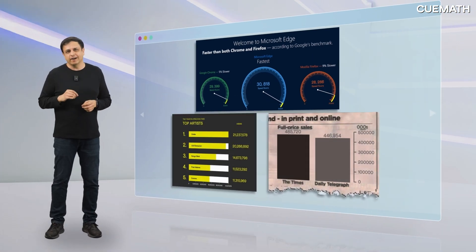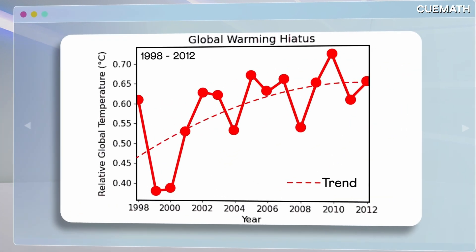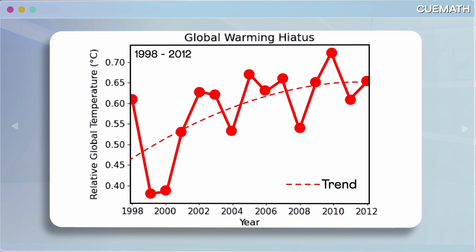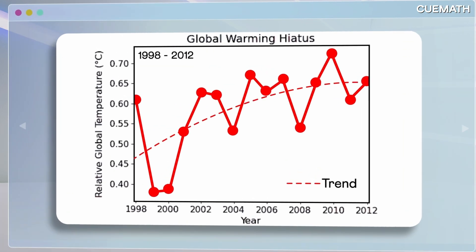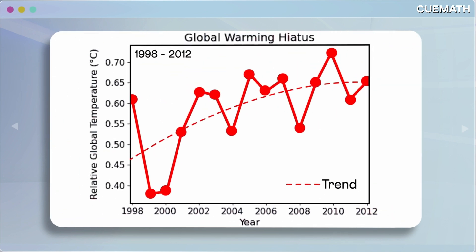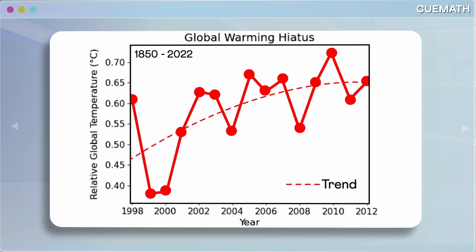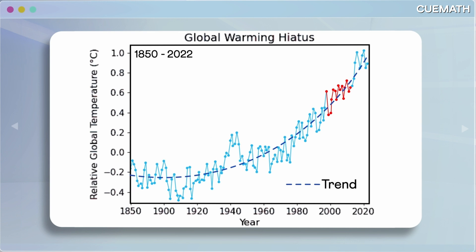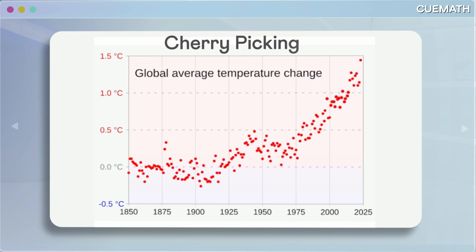Truncating the Y-axis is a top pick for crafting misleading graphs, but it's not the only one. Consider this graph: it shows the global temperature rise slowing down as the line nearly flattens. Some researchers used this to claim that global warming has come to a pause. But look at the X-axis — the data is from 1998 to 2012 only. Here's the full picture since 1850: temperatures are rising. The first graph was just a small part of the data. Conveniently pick data and show any trend you like. This misleading tactic is called cherry picking.